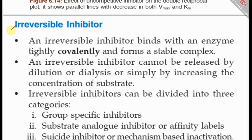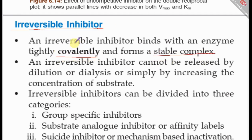Now let us examine the second major group of enzyme inhibitors: irreversible inhibitors. As the name suggests, irreversible inhibitors bind to the enzyme tightly and covalently, forming a stable complex. The interaction between the inhibitor and the enzyme is covalent and irreversible, meaning the action of these inhibitors cannot be restored.